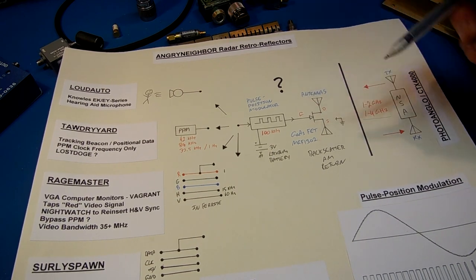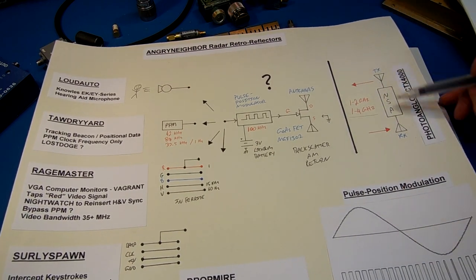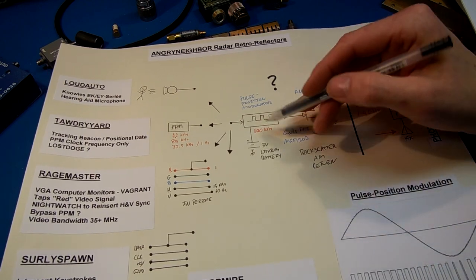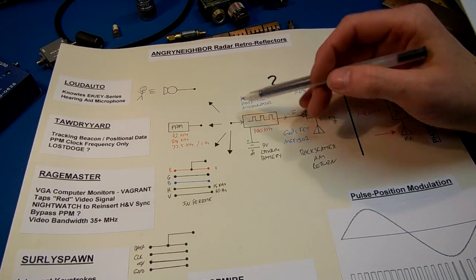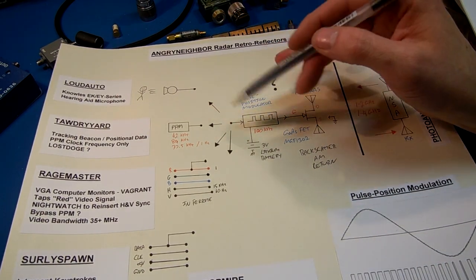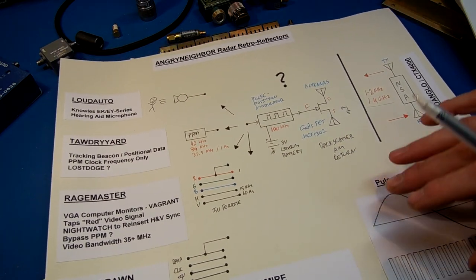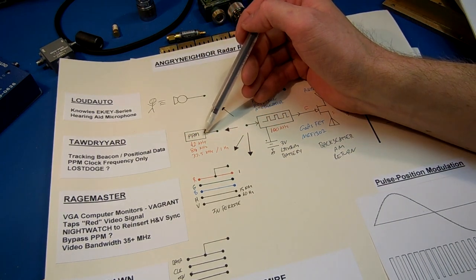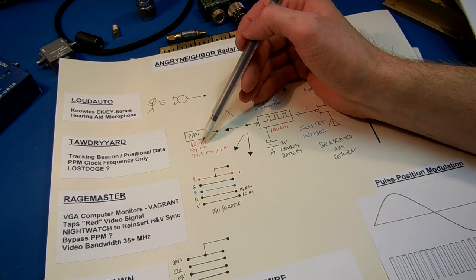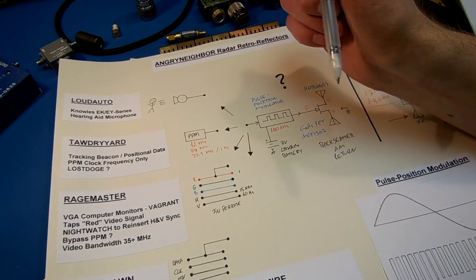That will create the backscatter AM return. You have your Photo Anglo unit over here. Both the modulator, any microphones hooked up to it, run off the standard 3 volt lithium battery. The Tawdry Yard unit is just the raw pulse position modulator. Each one has its own carrier, independent carrier frequency for planting positional data.